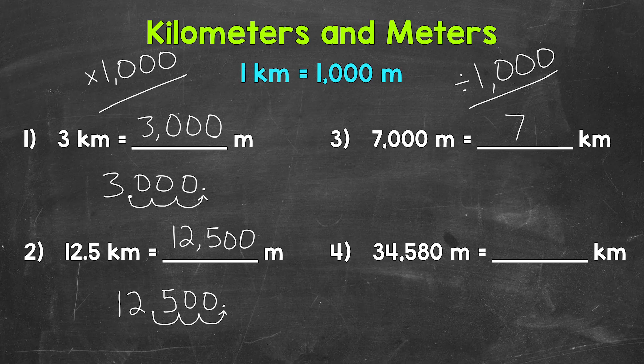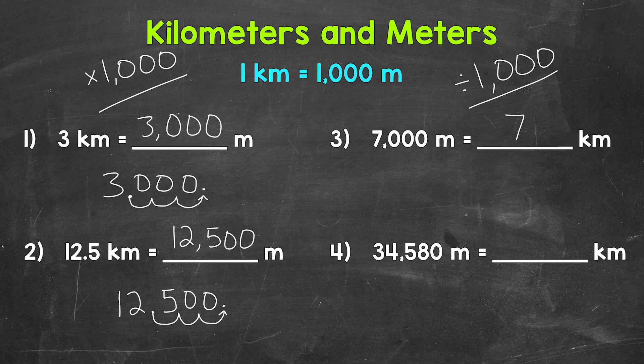Let's move on to number 4, where we have 34,580 meters equals how many kilometers. Meters to kilometers — we need to divide by 1,000. This number is not as easy to work with as the 7,000 meters in number 3, where we used mental math to divide by 1,000. What we can do here, we can move the decimal 3 times to the left — that's going to divide our number by 1,000. When we divide by 1,000, we push or shift each digit to the right 3 places, giving us one one-thousandth of the value of our original number.